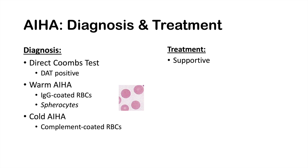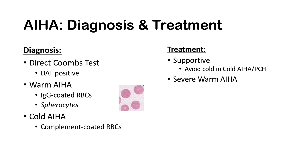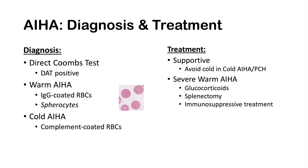Treatment is often supportive unless there are severe symptoms or severe anemia. For cold autoimmune hemolytic anemia and paroxysmal cold hemoglobinuria, avoiding cold temperatures is the mainstay of supportive treatment to prevent hemolysis episodes. For severe warm autoimmune hemolytic anemia, glucocorticoids are a first-line treatment; splenectomy can be performed; immunosuppressive treatments like azathioprine or rituximab may be used; folic acid supplementation helps long-term management; and red blood cell transfusion may be needed.